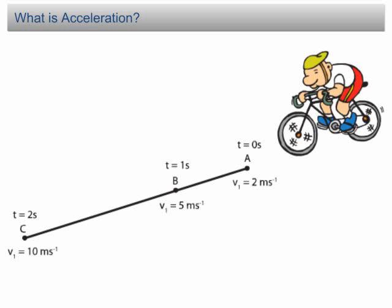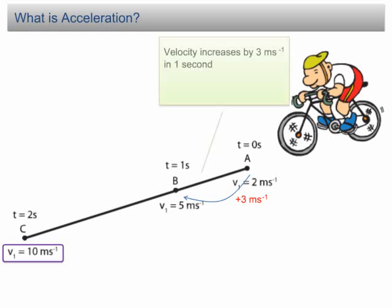What is acceleration? The diagram shows a cyclist cycling along a straight line. It passes through point A, B, and C at time 0 seconds, 1 second, and 2 seconds respectively. Let's say the velocity at A is 2 m per second, the velocity at B is 5 m per second, and the velocity at C is 10 m per second. From A to B, the velocity increases from 2 m per second to 5 m per second. It increases by 3 m per second in 1 second.